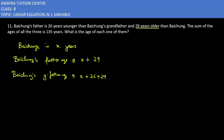The sum of the three is 135. So: X plus X plus 29 plus X plus 26 plus 29 is equal to 135.